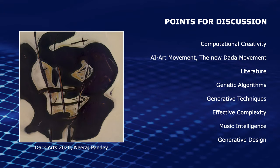These are the discussion points for the session. We'll be talking about computational creativity, the AI art movement which I call a new data movement, literature and poetry, how genetic algorithms can show creative systems, generative techniques like generative art, effective complexity, music intelligence, and we'll end with generative design. The main goal is to look at Python as an artistic and visual programming language with the simplicity and beauty of computational creativity.